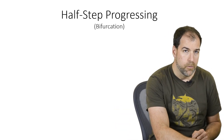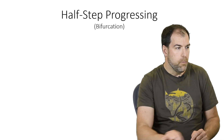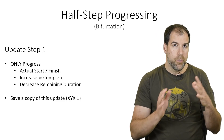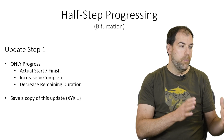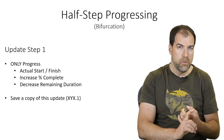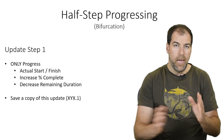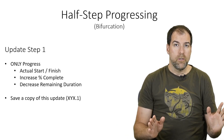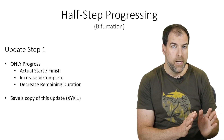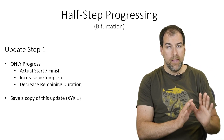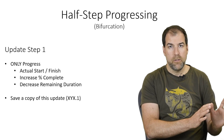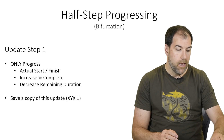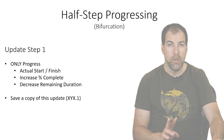In step one, we create the first update schedule. All we do is input our progress information — our actuals, our percent completes — and we shrink our remaining durations. That's all we're allowed to do in that update. You're going to save that update as update schedule dot one. Then we make a copy of it and move to update part two, the second step.